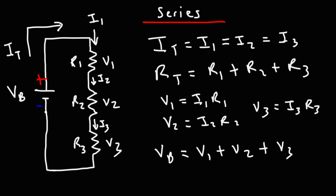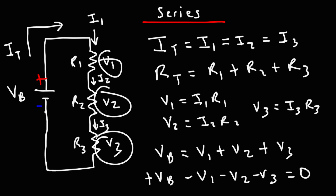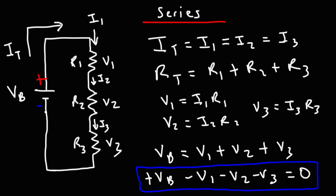This has to do with Kirchhoff's voltage law, which states that the sum of all the voltages in a loop will equal zero. If you move V1, V2, and V3 to the other side, you get positive VB minus V1 minus V2 minus V3 equals zero. VB is positive because the battery adds energy to the circuit, while V1, V2, and V3 are negative because they absorb energy. So VB equals the sum of V1, V2, V3 in a series circuit.